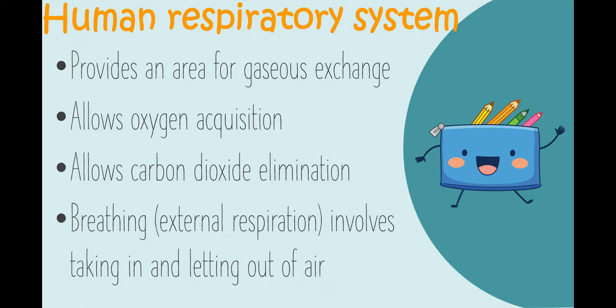The human respiratory system provides an area for gaseous exchange between the blood and the environment. It allows oxygen acquisition and carbon dioxide elimination. The gaseous exchange in the lungs is called breathing, which is an external respiration. This exchange involves the taking in and letting out of air.